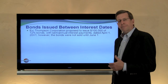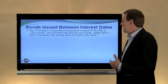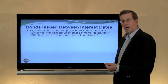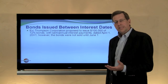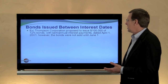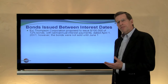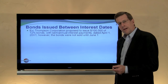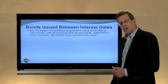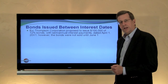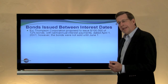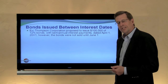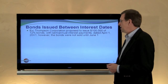A bond might be issued between an interest date. It might be dated, for example, April 1, 20X1, but for some reason delayed in its issuance until June 1. So we've got $100,000 of 12% bonds, involving $12,000 a year of interest, or $1,000 a month. They're dated on April 1, but it's two months later — April and May pass — until the bonds are actually issued.